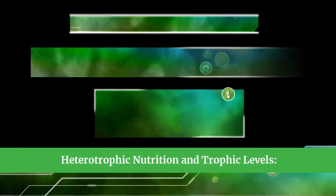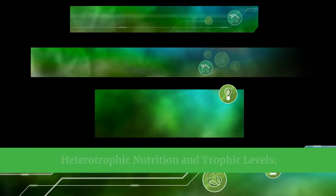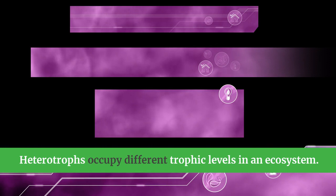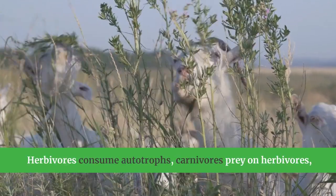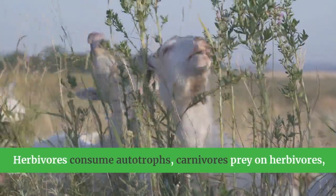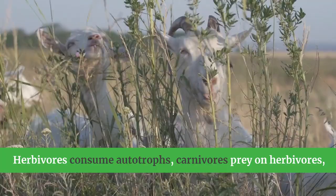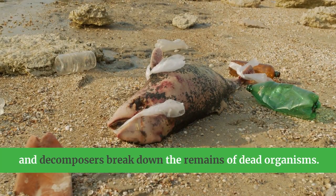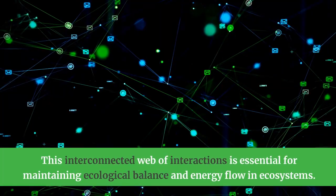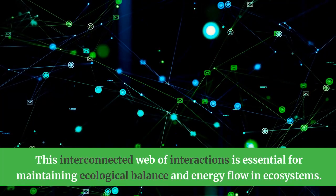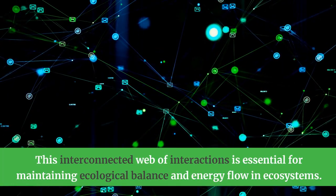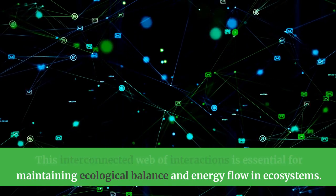Heterotrophs occupy different trophic levels in an ecosystem. Herbivores consume autotrophs, carnivores prey on herbivores, and decomposers break down the remains of dead organisms. This interconnected web of interactions is essential for maintaining ecological balance and energy flow in ecosystems.